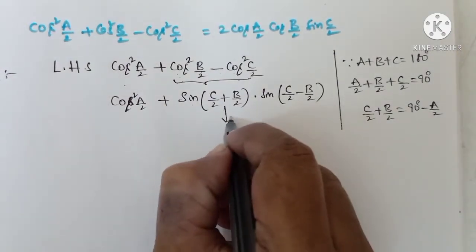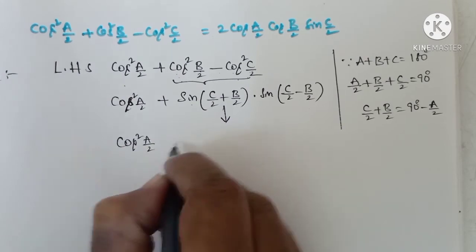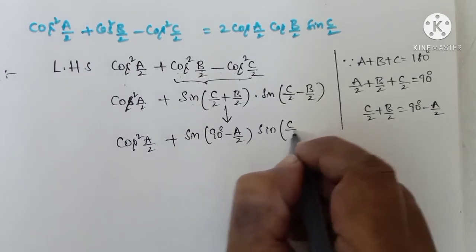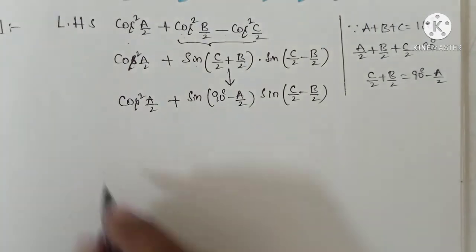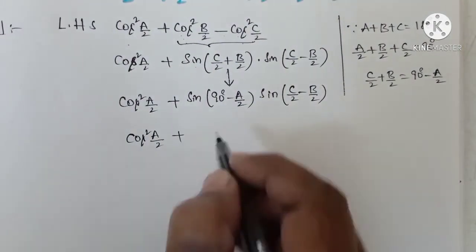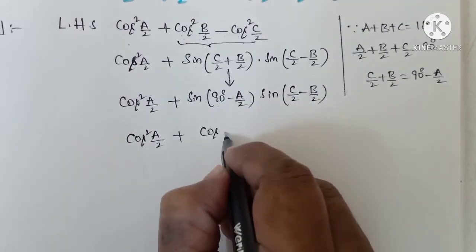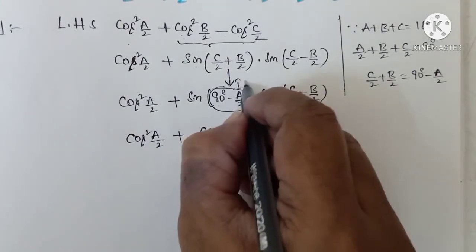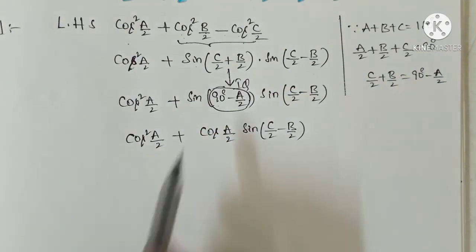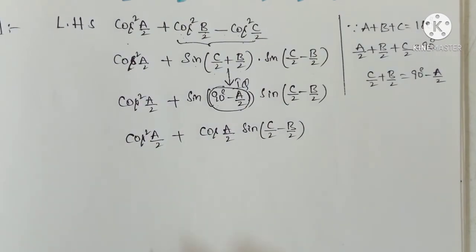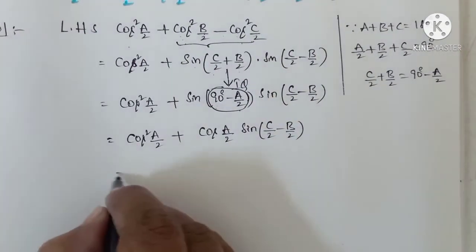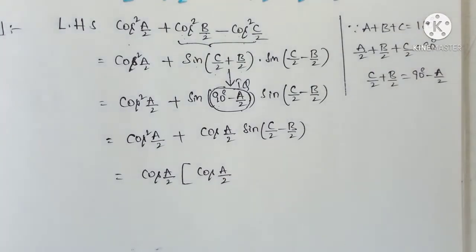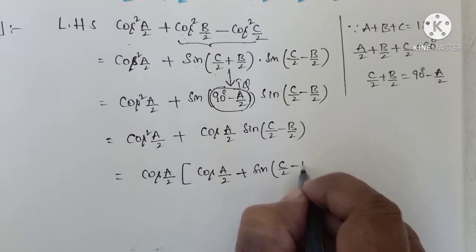So we replace c by 2 plus b by 2 with 90 degrees minus a by 2. This gives: cos squared a by 2 plus sin(90 degrees minus a by 2) into sin(c by 2 minus b by 2). When there is 90 degrees, sin converts to cos. So cos squared a by 2 plus cos(a by 2) into sin(c by 2 minus b by 2). This is in the first quadrant, so sign is positive. Now take cos(a by 2) as common from both terms: cos a by 2 into cos(a by 2) plus sin(c by 2 minus b by 2).